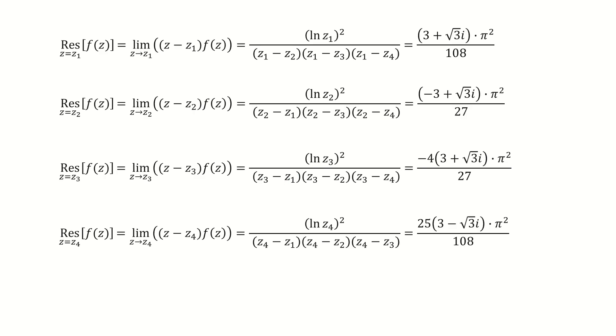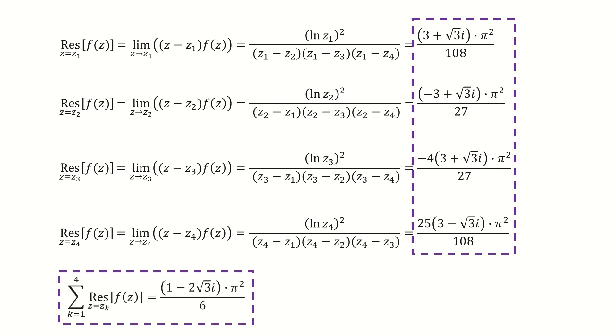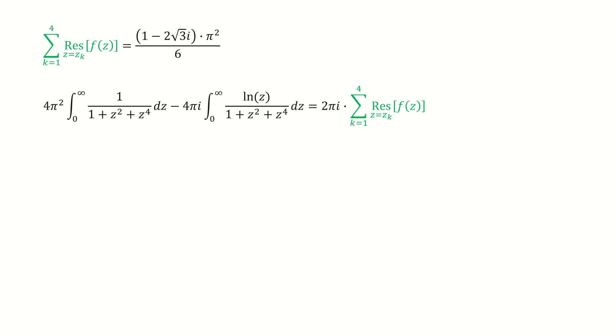And here I list the results for the four residues. And next, we just take the sum for these four residues. After simplify it, we got here. I copy them here. So after plug-in the result for the sum of residues, we got here. For the right hand side, we simplify it. And then we write it into the real part and the imaginary part.